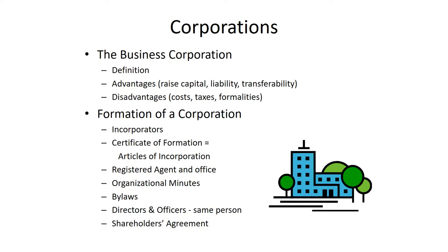Once the certificate of formation is filed, the shareholders can meet and decide how they're going to start the business — they elect directors, and the directors are told here are the bylaws that will govern the rights of the shareholders, the rights of the directors, the meetings of the directors, and the officers. In some cases it may just be a president. The fiction that makes a corporation awkward for a small business is that you've got the shareholder who meets and elects themselves to the board of directors.